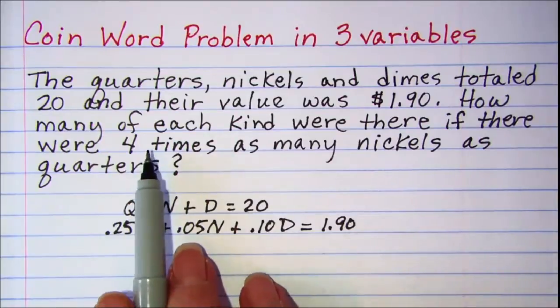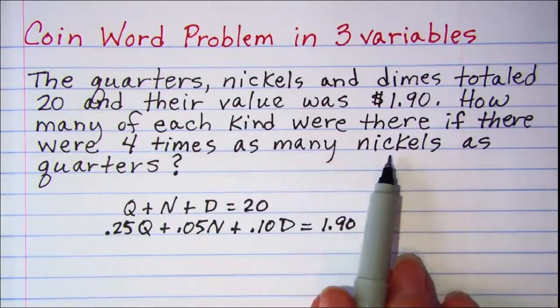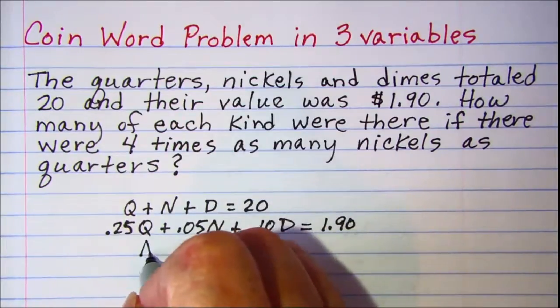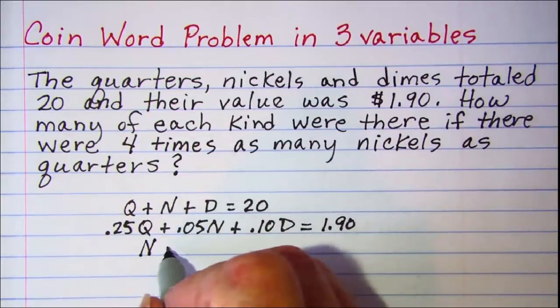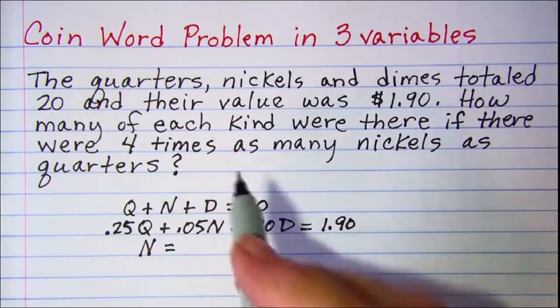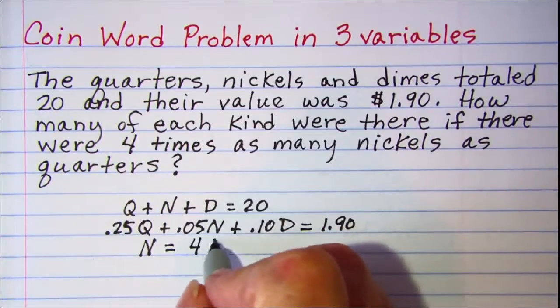It says there is four times as many nickels, so the number of nickels is a larger number, which means that N for nickels has to be on one side of the equation by itself since this is the larger quantity. Whenever we have the equation, the two sides are equal, so our smaller quantity, which is quarters, has to be multiplied by four, so we have to write four times Q.